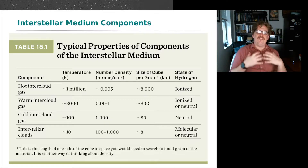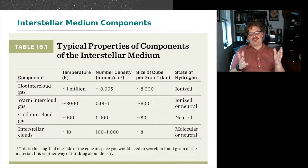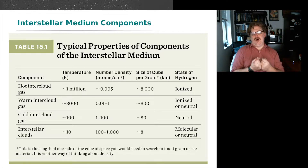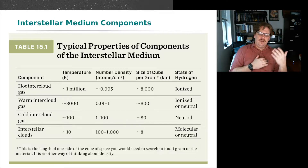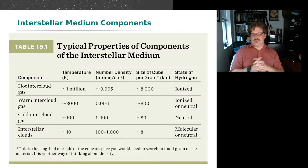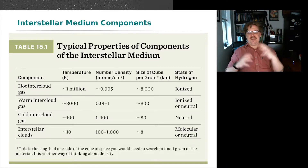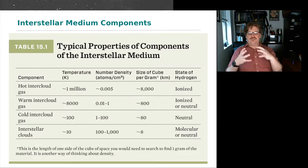Going from hottest to coolest, we have hot intercloud gas. The temperature is on the order of about a million degrees Kelvin. It is very rarefied, and the hydrogen gas — really any element within this gas — is going to be ionized. These are individual atoms stripped of their electrons, particularly hydrogen.